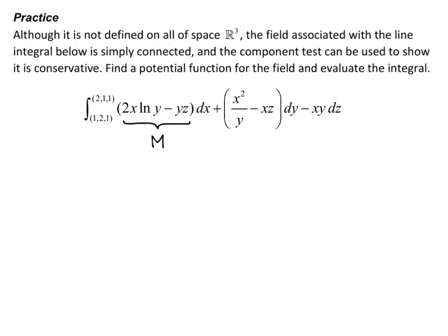The function attached to dx — 2x natural log of y minus yz — is our M. The function attached to dy — x squared over y minus xz — is our N. And the function attached to dz — negative xy — is our P.